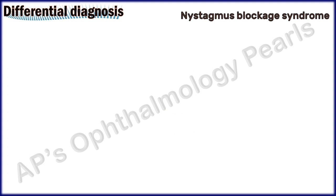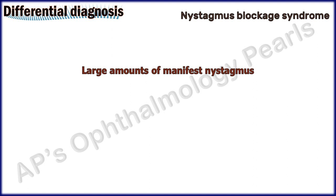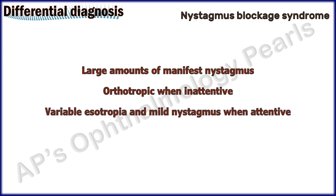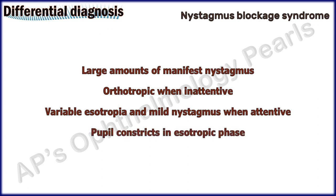Nystagmus blockade syndrome patients will have moderate to large amounts of manifest nystagmus and be orthotropic when inattentive, but will have variable esotropia and nystagmus when attentive. Observing the patient for pupillary constriction during the esotropic phase may be helpful in making this diagnosis.